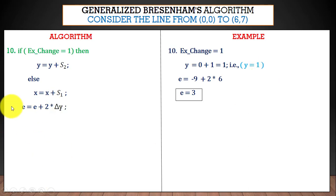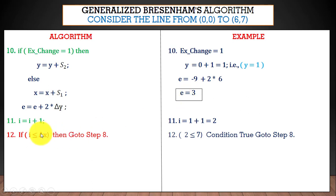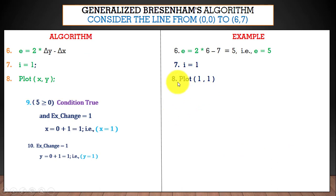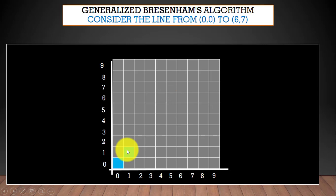Now compute e = −9 + 2 × delta y = −9 + 2×6 = 3. Increment counter i = 1 + 1 = 2. Check condition: 2 < 7 is true, so go to step 8 and plot the next point. We have x = 1, y = 1, so we plot the point (1, 1).